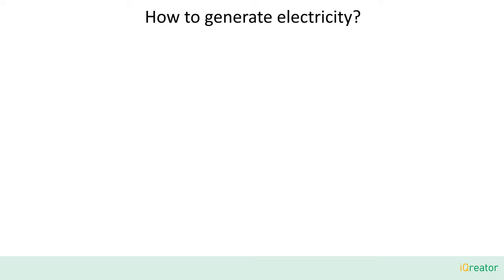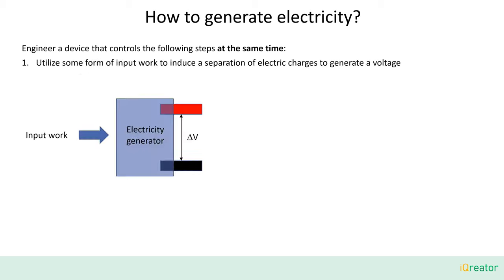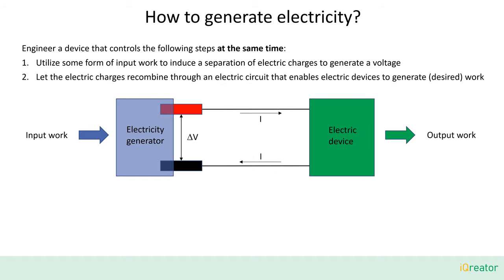So now the big question: how to generate electricity? In order to do that, we need an engineering solution for a device that performs two basic steps at the same time. First, utilize some form of input work to induce a separation of electric charges to generate a voltage. And second, let the electric charges recombine through an electric circuit that enables connected electric devices to generate a desired work. This is schematically shown here.